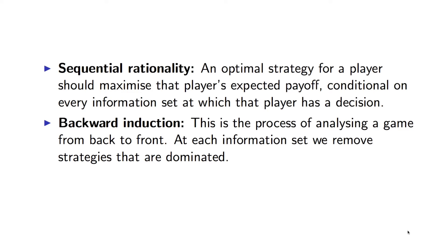And backward induction then uses this assumption of sequential rationality to start at the end of the tree and make the assumption that everyone acts rationally and slowly remove all dominated strategies. And this allows us to obtain a Nash Equilibrium.